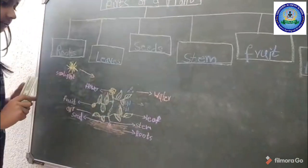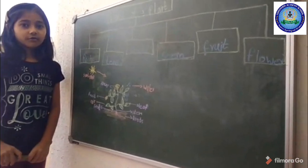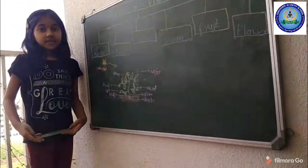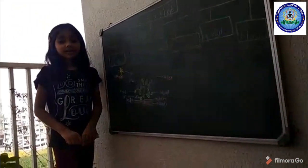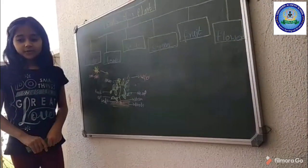Types of plants: trees, shrubs, herbs, climbers and creepers. Some examples of them.